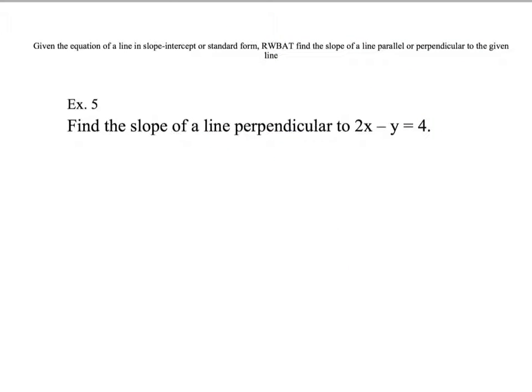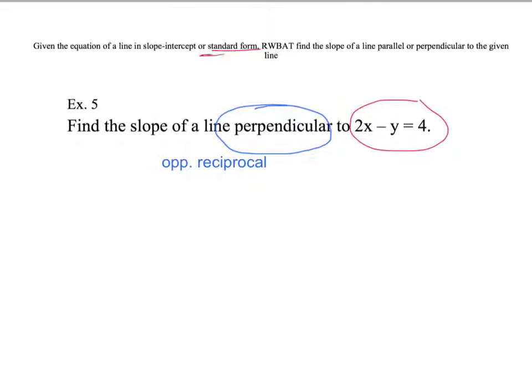Example 5: find the slope of a line perpendicular to 2x minus y equals 4. We're given perpendicular, so please annotate: remind yourself it is opposite and reciprocal — not just one of those, because if you only find the slope that's opposite, that's not actually perpendicular. The line is in standard form, so the slope is not obvious, and we need to convert it into slope-intercept form.